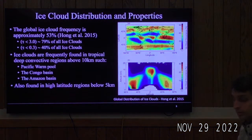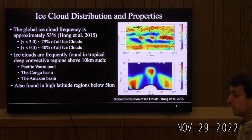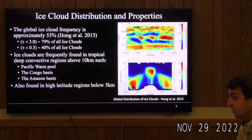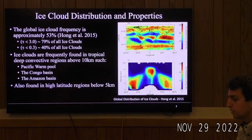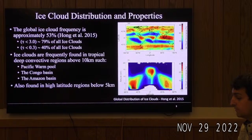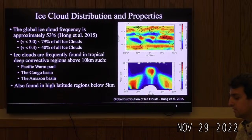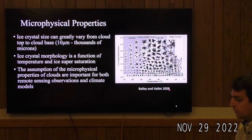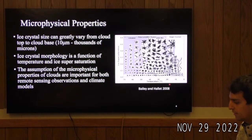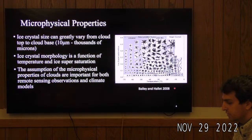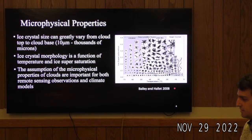Ice clouds are very common on our planet. The global ice cloud frequency among clear sky and cloudy observations is about 53%, according to Hong et al. 2015, with the distribution skewed towards optically thinner clouds. Ice clouds are frequently found in tropical deep convective regions above 10 kilometers, as well as in high-latitude regions below about 5 kilometers. There are a variety of ice crystal habits that may compose an ice cloud, as seen in the Bailey and Hallett 2008 figure—a ton of different shapes and sizes.